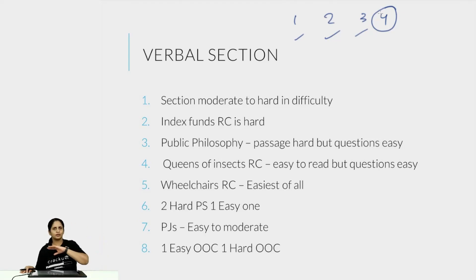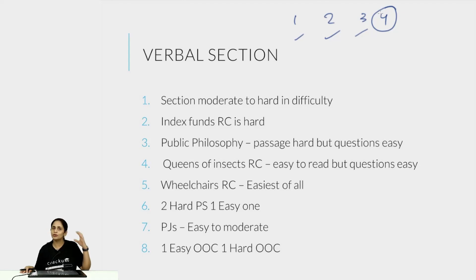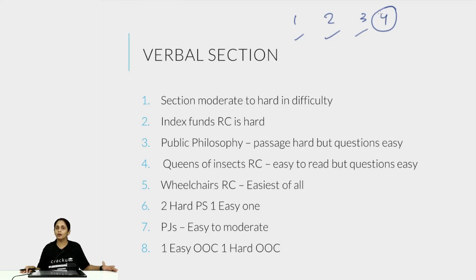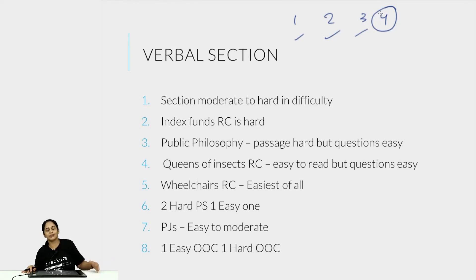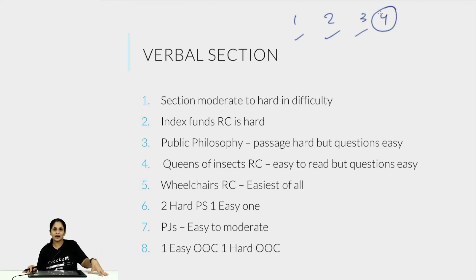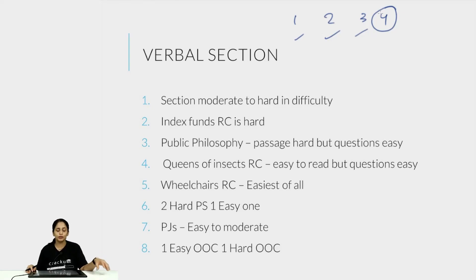The last RC on wheelchairs was super easy — absolutely detail-oriented, objective, and the RC you should not have missed. If you missed that RC, you have to think about your attempt strategy. If you are somebody who does not solve the entire section and solves only three RCs, then you have to pick those three RCs with a lot of care. If you left this RC because it came last, then you should rethink how you are picking your RCs because this was the easiest of them all — absolutely easy to read and easy to solve.